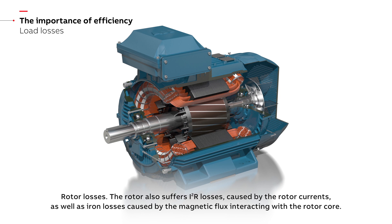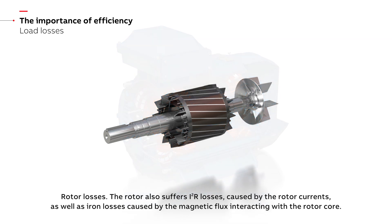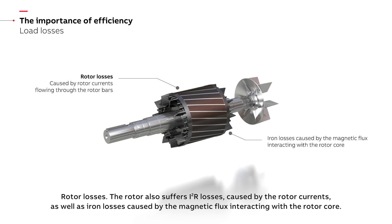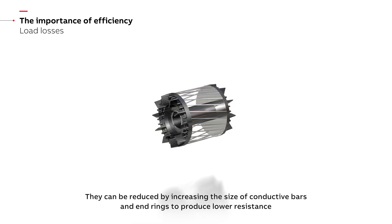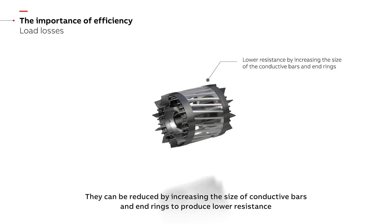Rotor losses: the rotor also suffers I squared R losses caused by the rotor currents, as well as iron losses caused by the magnetic flux interacting with the rotor core. They can be reduced by increasing the size of conductive bars and end rings to produce lower resistance.